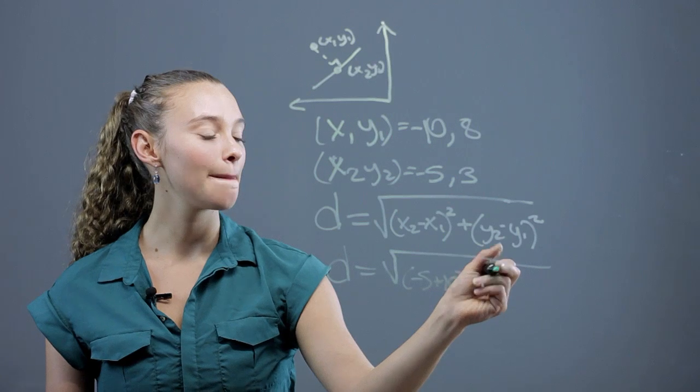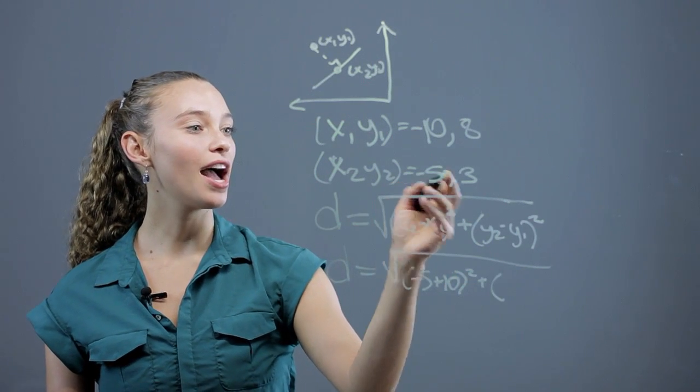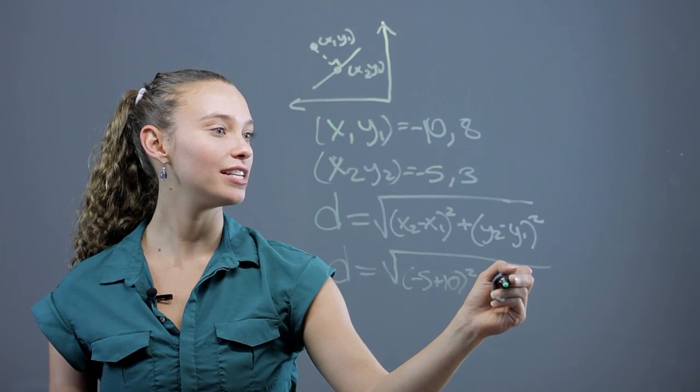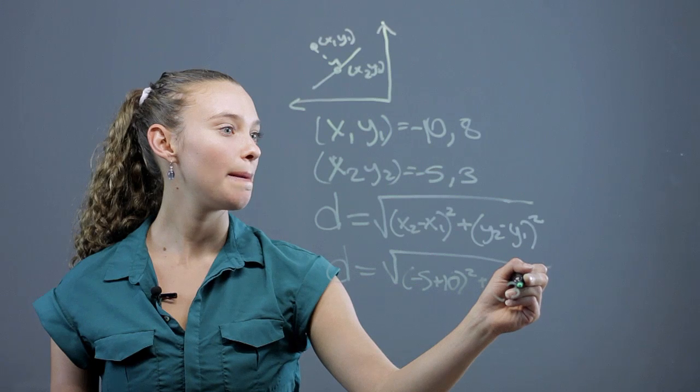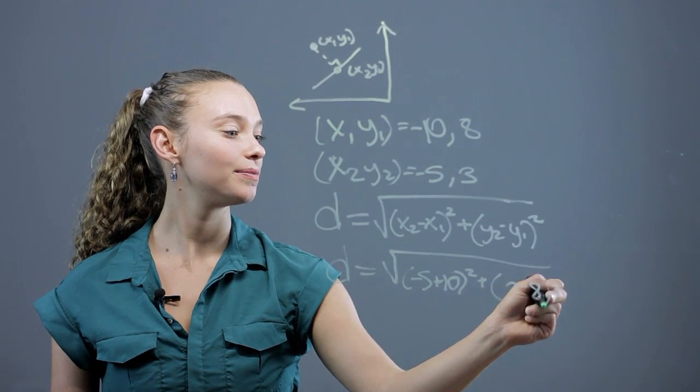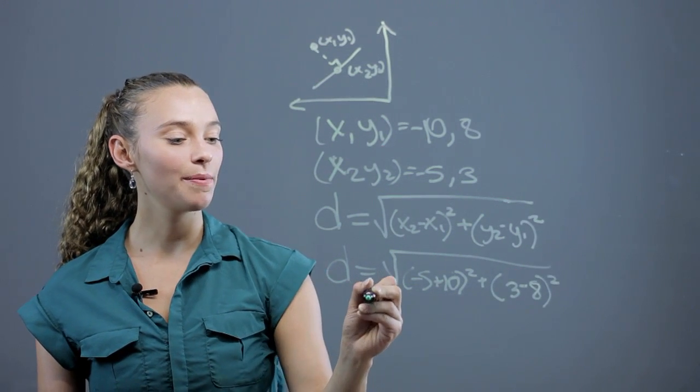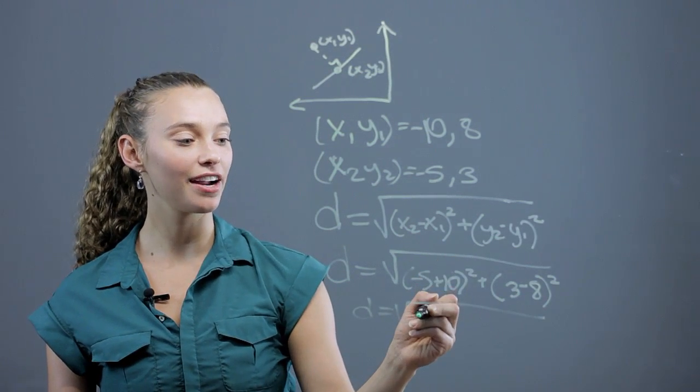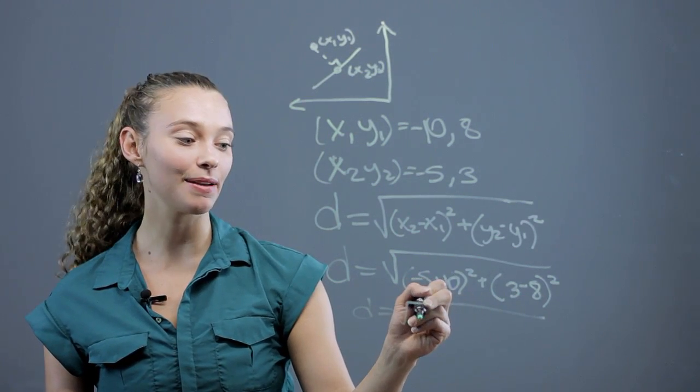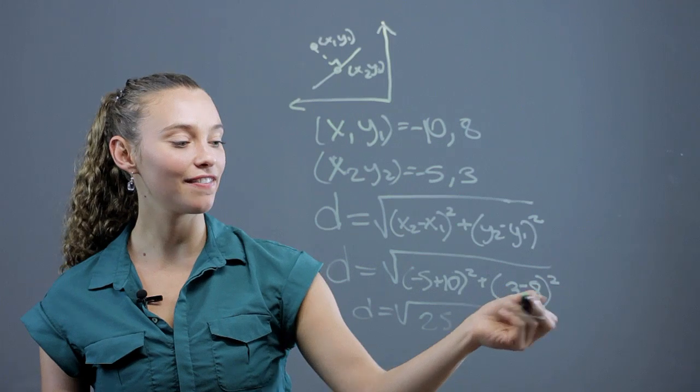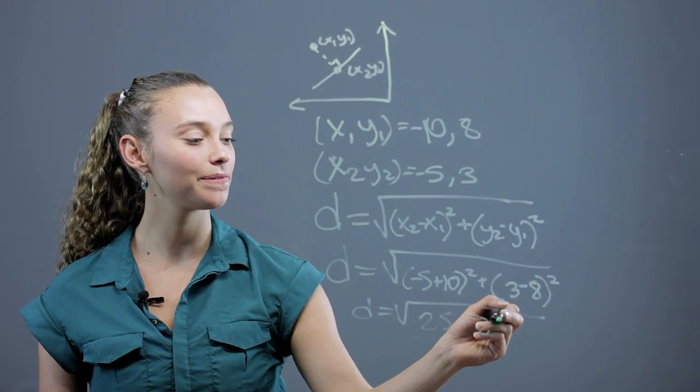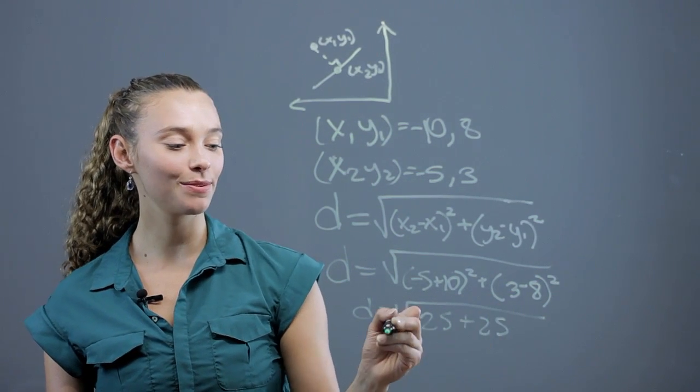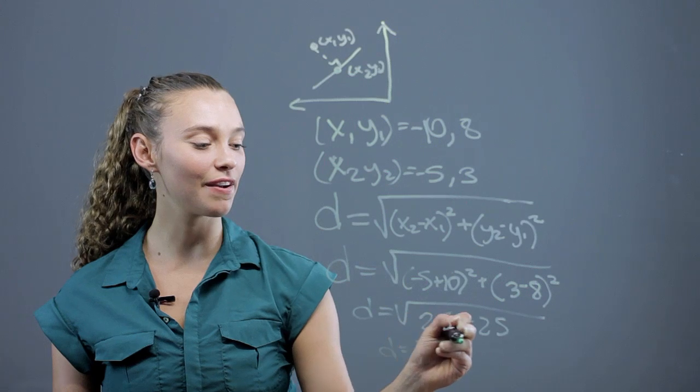Quantity squared plus y2 is 3 minus 8 squared. So we end up getting d is the square root of 5 squared, that's 25, and negative 5 squared is 25. So 25 plus 25, d equals the square root of 50.